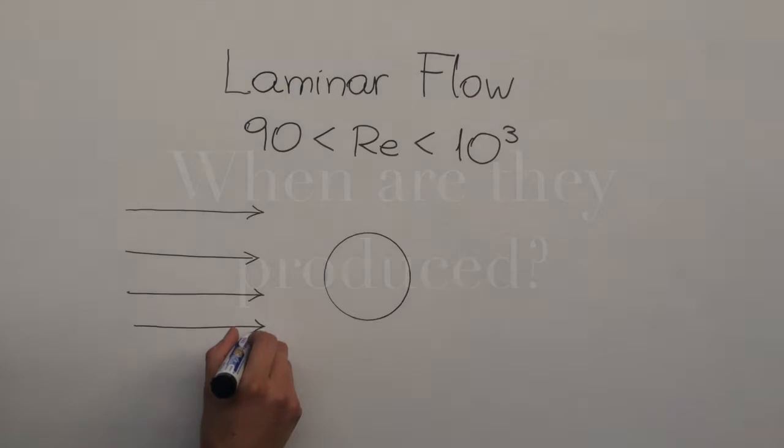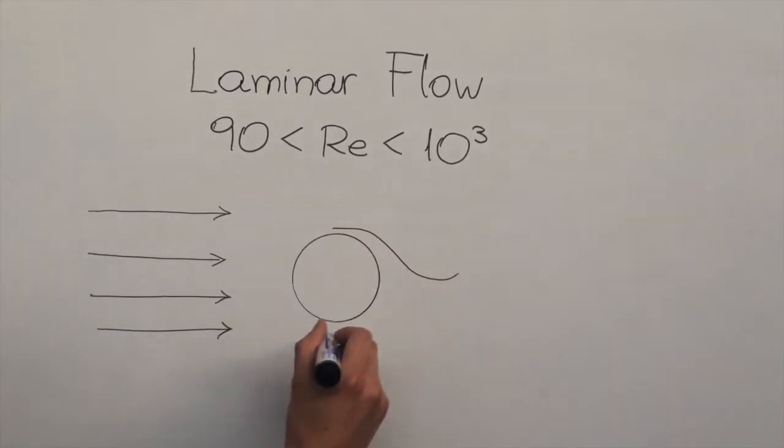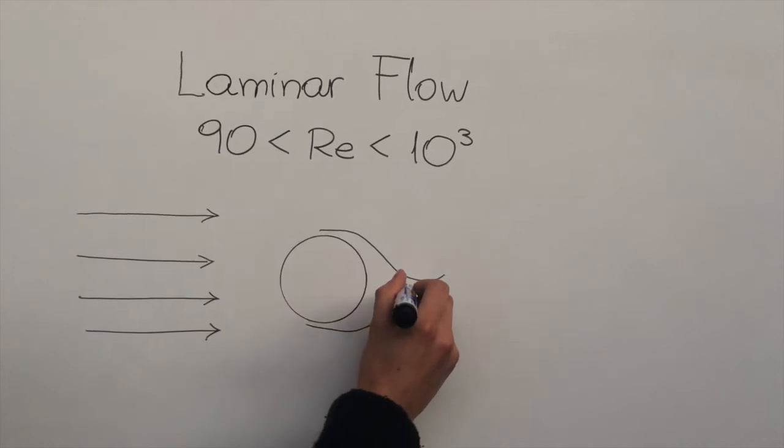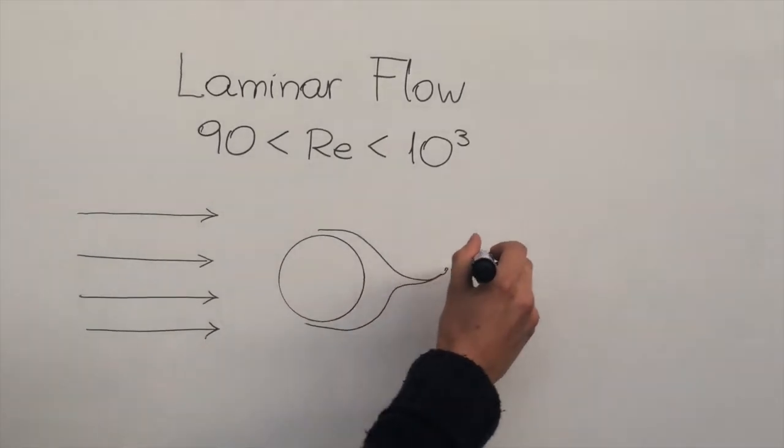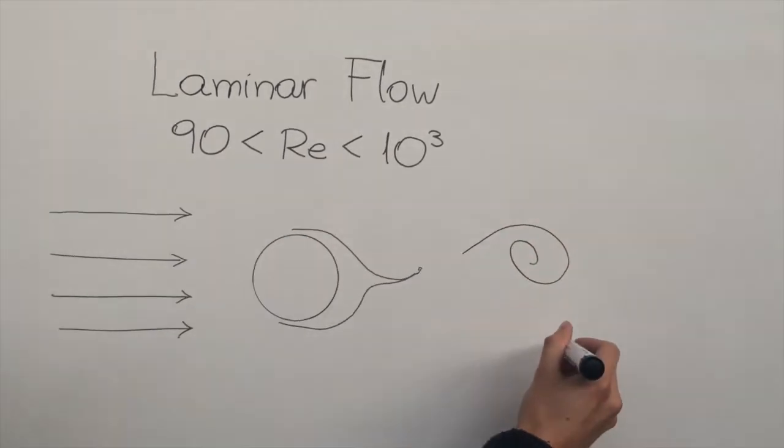And when are they produced? The Von Kármán Vortex Street occurs only when the Reynolds number achieves certain values, usually not too low but not very high. When the fluid is laminar, vortices are recorded in periods.